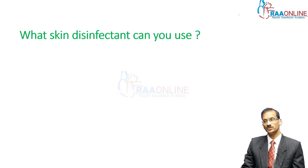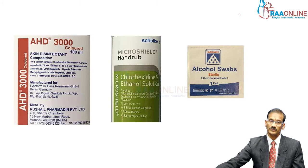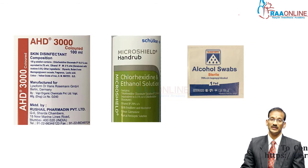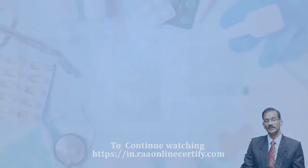Before you do a cannulation, you use skin disinfectants of various kinds. What do you use in a hospital? These are three different things which we could use. Some people also use povidone iodine, but in our hospital we have all these different makes.